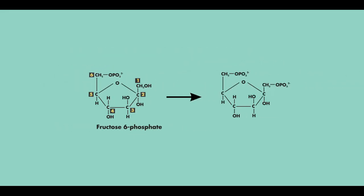In the next reaction, fructose 6-phosphate undergoes a reaction with phosphofructokinase 1. Again, another kinase. So we know there will be a transfer of a phosphate molecule.